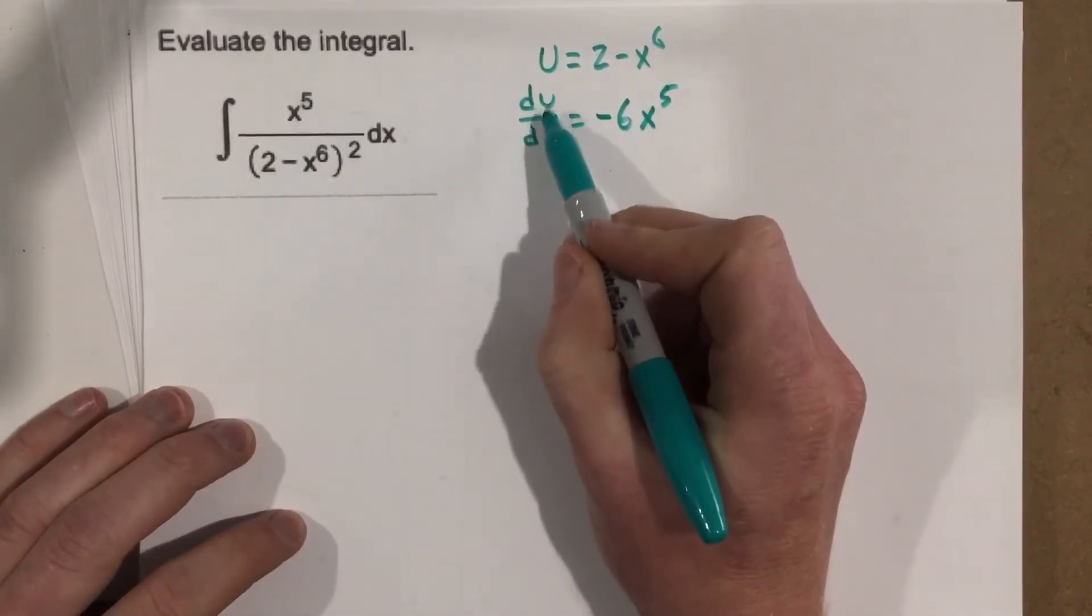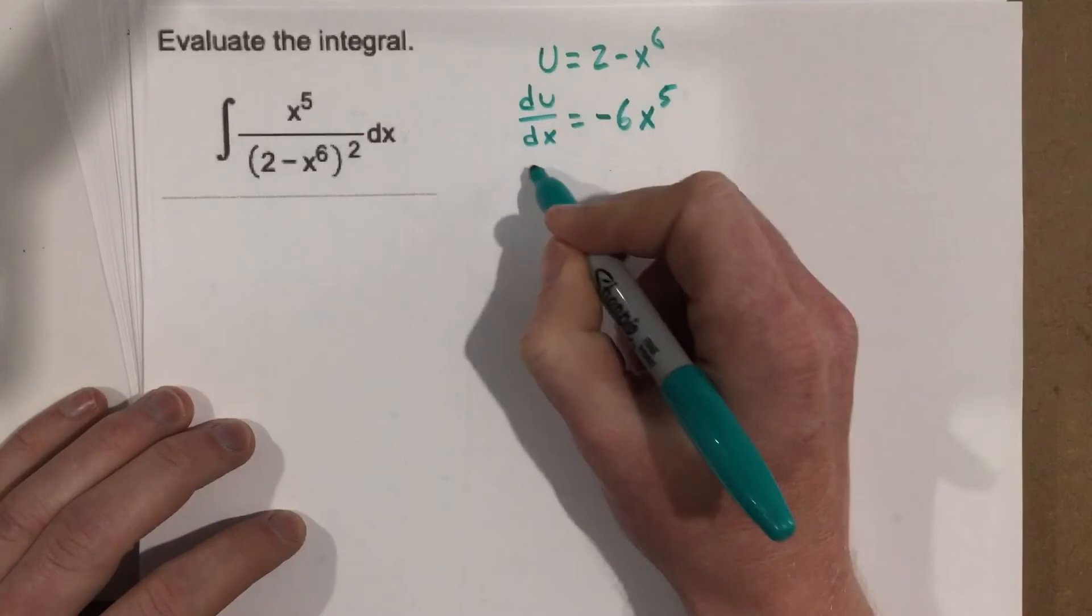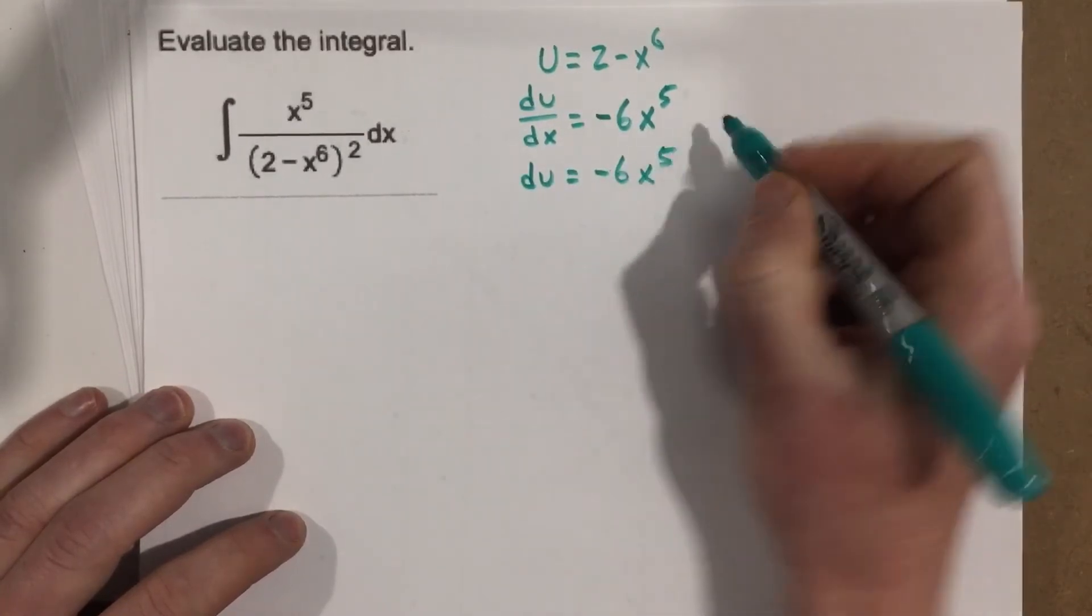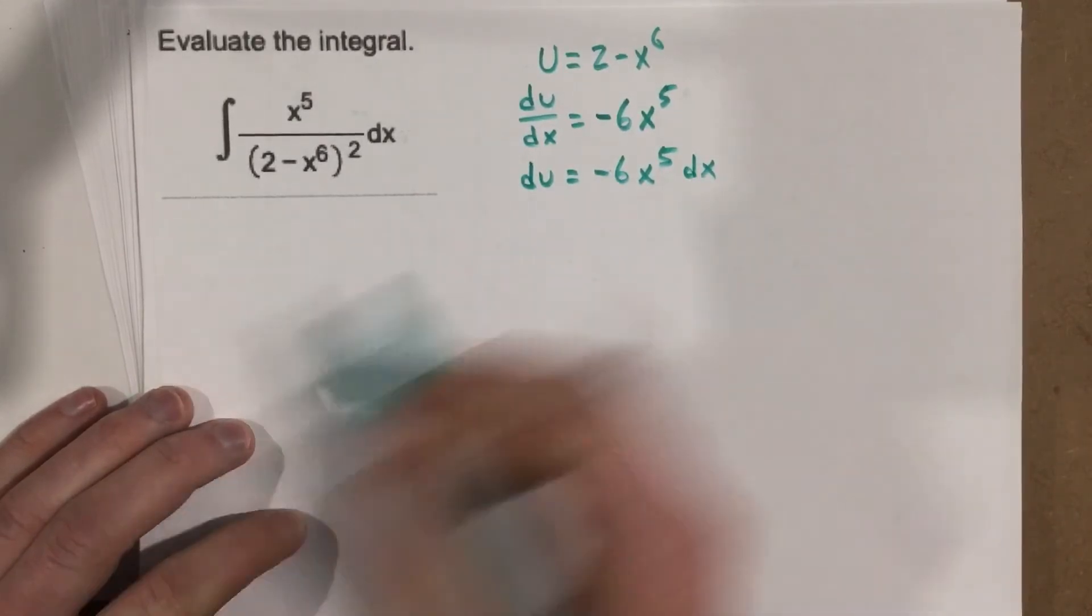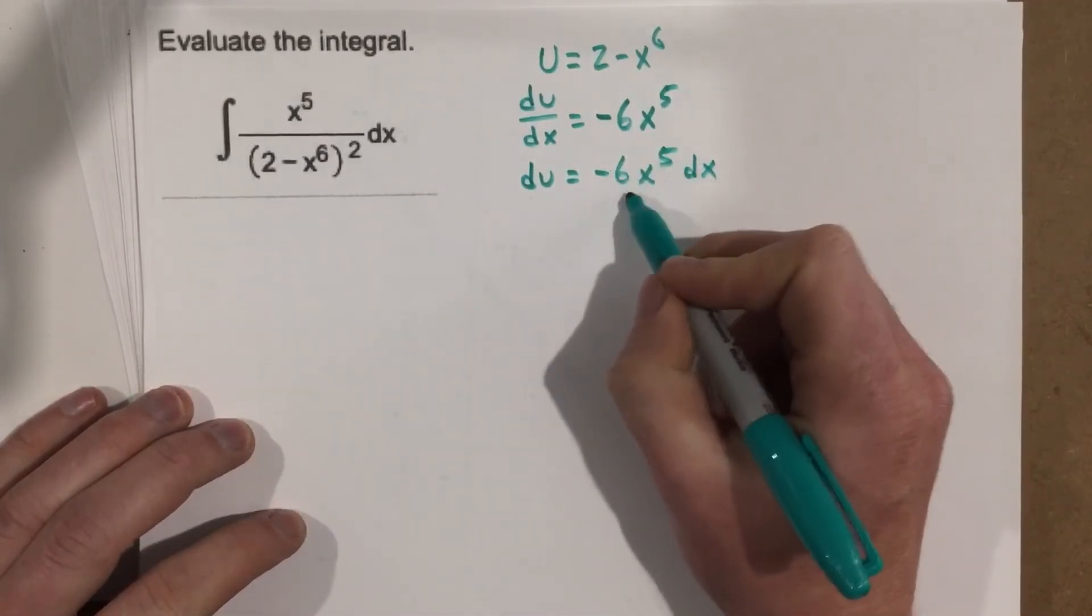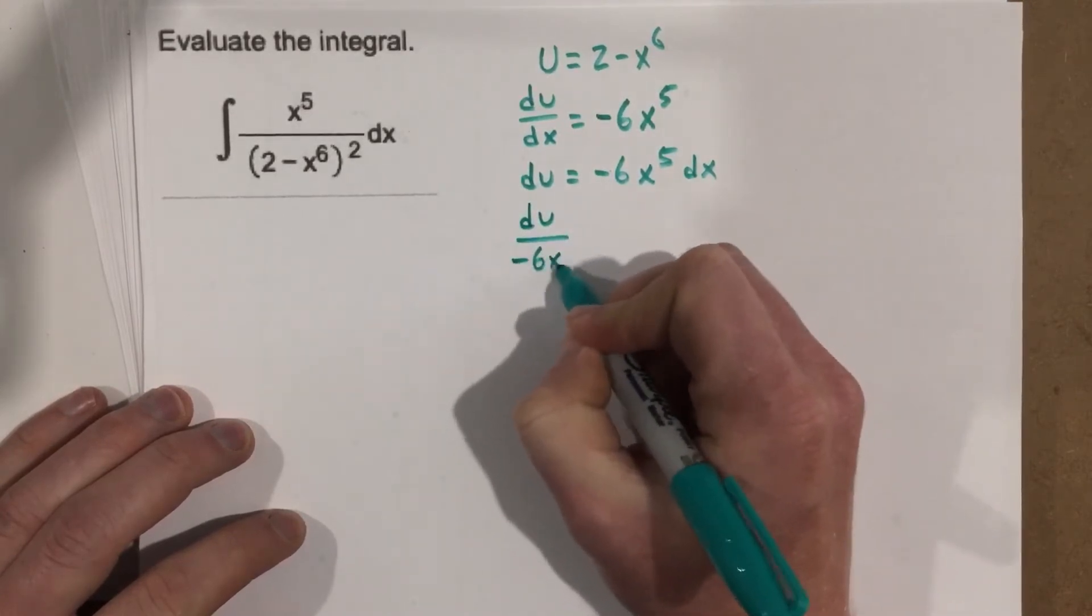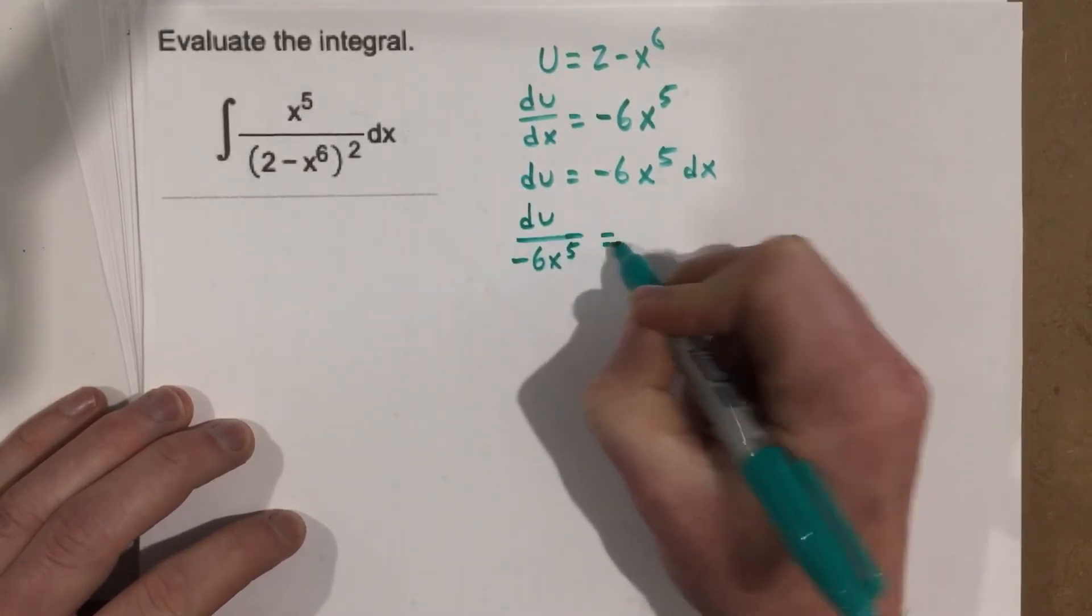Let's solve for du, or dx here. Multiply by dx, so we have du equals negative 6x to the 5th dx. And let's divide by negative 6x to the 5th, so we have du over negative 6x to the 5th equals dx.